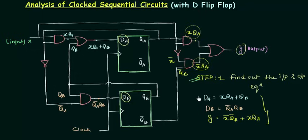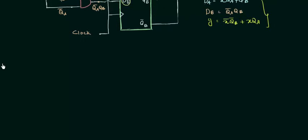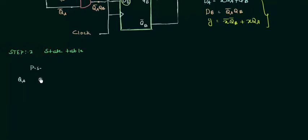The next thing is to make the state table, which is step number 2. The first column consists of the present state QA, QB. The second column has the input X. The third column has the next state QA plus, QB plus — this plus represents it is the next state. And the last column is Y, our output.